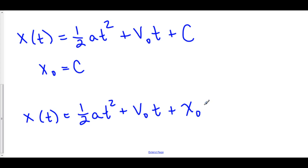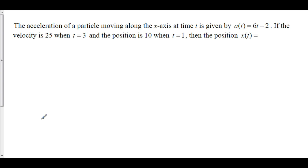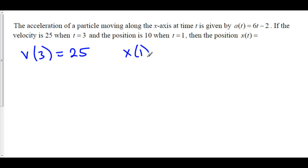And there we go — our position function is x(t) = one-half at² plus v-naught·t plus x-naught. Let's do some problems with actual numbers. The acceleration of a particle moving along the x-axis at time t is given by a(t) = 6t minus 2. The velocity is 25 when t equals 3, so v(3) = 25, and the position is 10 when t equals 1, so x(1) = 10. We want to find the actual position function.